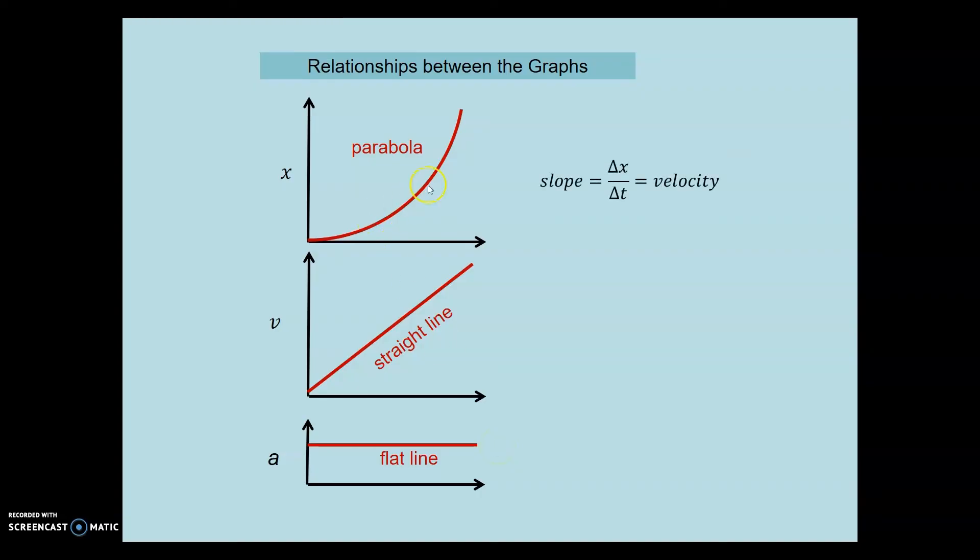The slope of this one at any point, if we want to work out the velocity at that instant, we draw a tangent and the slope of that gives me the velocity value at that time. And the slope of this line, which is constant, is equal to the value of the acceleration.